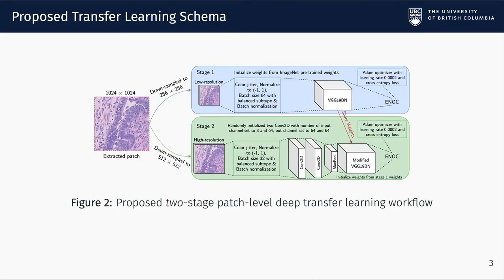I will briefly go over the details of our proposed patch-level classifier. To obtain a robust slide-level classifier, it is essential to have an accurate patch-level classification. A small patch extracted from a WSI with a limited field-of-view might lose the context of morphological patterns required to accurately classify a WSI. To extend the field-of-view while considering computational limits, tiled patches are usually downsampled from high resolution to low resolution. The trade-off between field-of-view and resolution makes it difficult to balance context and subtle details. Hence, we propose a two-stage deep transfer learning patch-level classification method using progressive resizing, which is able to extract features from larger field-of-views and also extract small details from high-resolution patches.